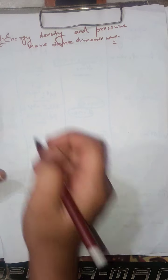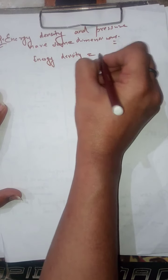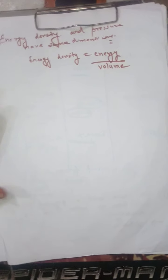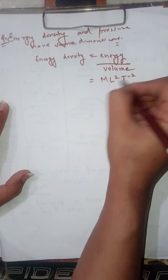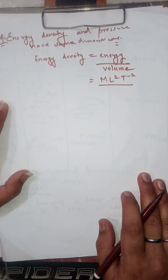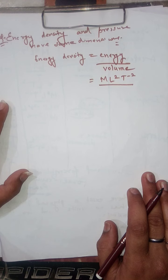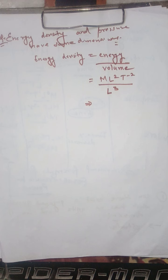Energy per unit volume is called energy density. The dimensional formula of energy is M L² T⁻². We divide this by volume, which has dimensional formula L³.